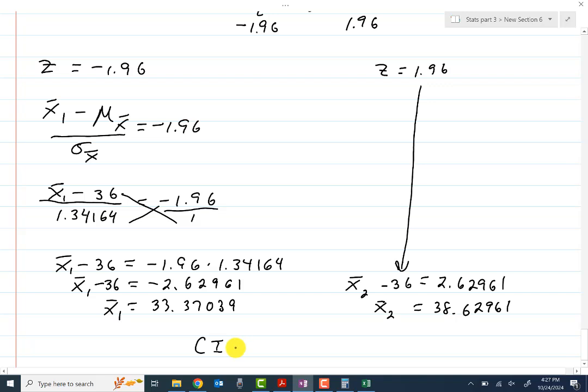And so our confidence interval will be a low of 33.37039 and will go up to 38.62961. And as I said before, we are, in this case, 95% confident that the population mean is in that interval.